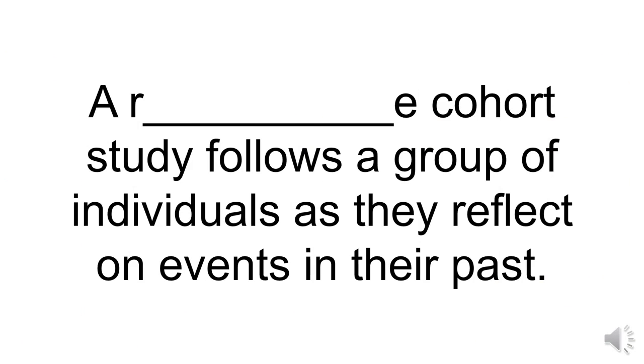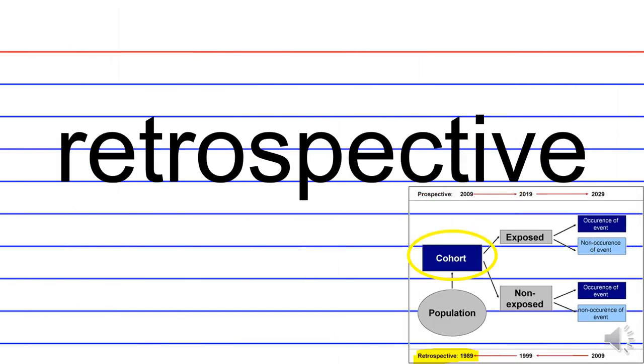A R blank E cohort study follows a group of individuals as they reflect on events in their past. So what type of study is this? That would be a retrospective cohort study. So here we have a cohort being selected from a particular population. It could be an age range such as individuals ages 10 to 20. And the retrospective study starts from the present time. Well, here it's 2009. It could have been 2015. And it goes back into the past.